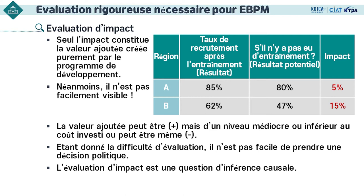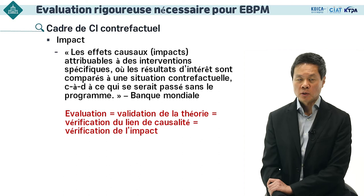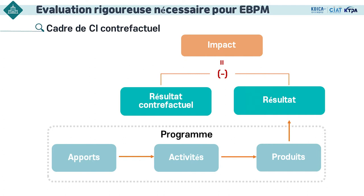En réalité, nous ne pouvons pas mesurer combien de personnes obtiennent un emploi sans formation. L'impact en rouge sur le tableau est invisible, donc il est très difficile d'évaluer l'impact. La définition de l'impact de la Banque mondiale est similaire : elle estime l'écart entre un réel changement induit par un projet et un éventuel changement qui pourrait se produire au cas où nous ne menions pas de projet. On appelle cet éventuel changement le counterfactual outcome, et l'écart entre l'outcome et le counterfactual outcome devient l'impact.